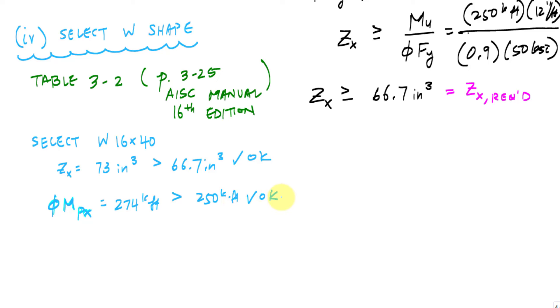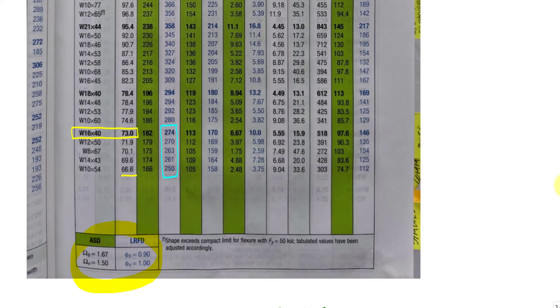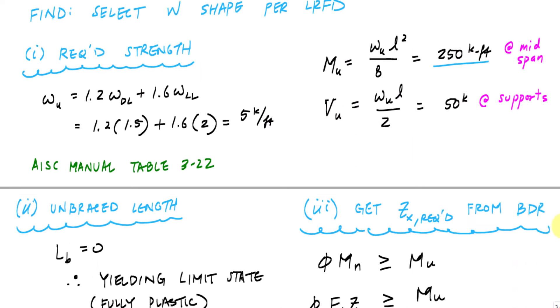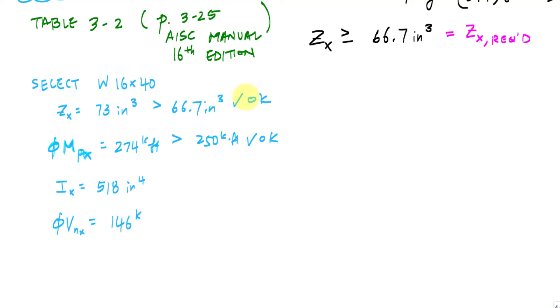And some other information that I have for this W16 by 40, if I look, is this number right here. That's the moment of inertia. And this right here is the shear capacity. So this is Ix, and this is the design shear strength of the section. That information is going to be useful for me as I check shear and deflection. So for flexure, my cross section is good. The moment strength is good. Now I just need to check the shear and the deflection.